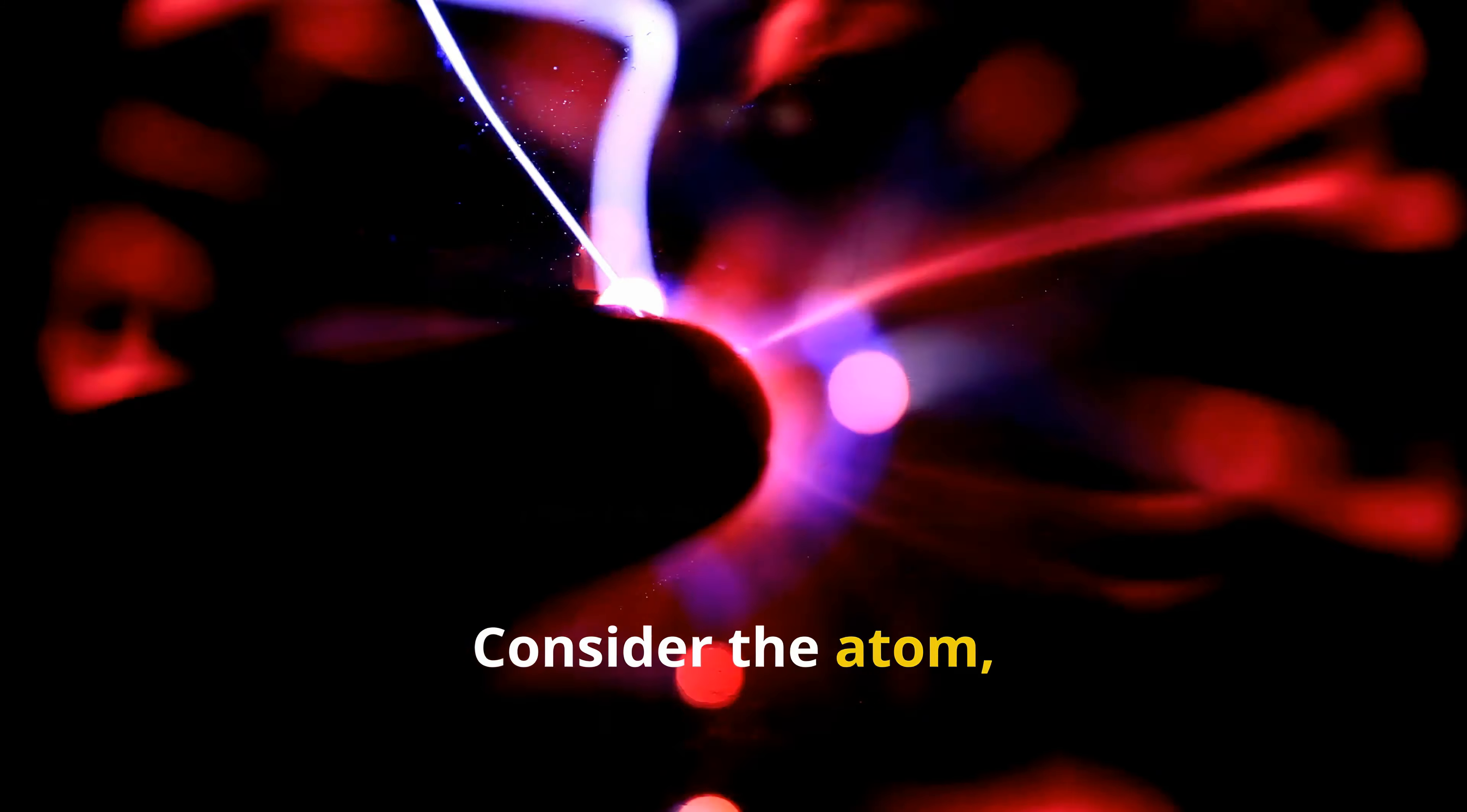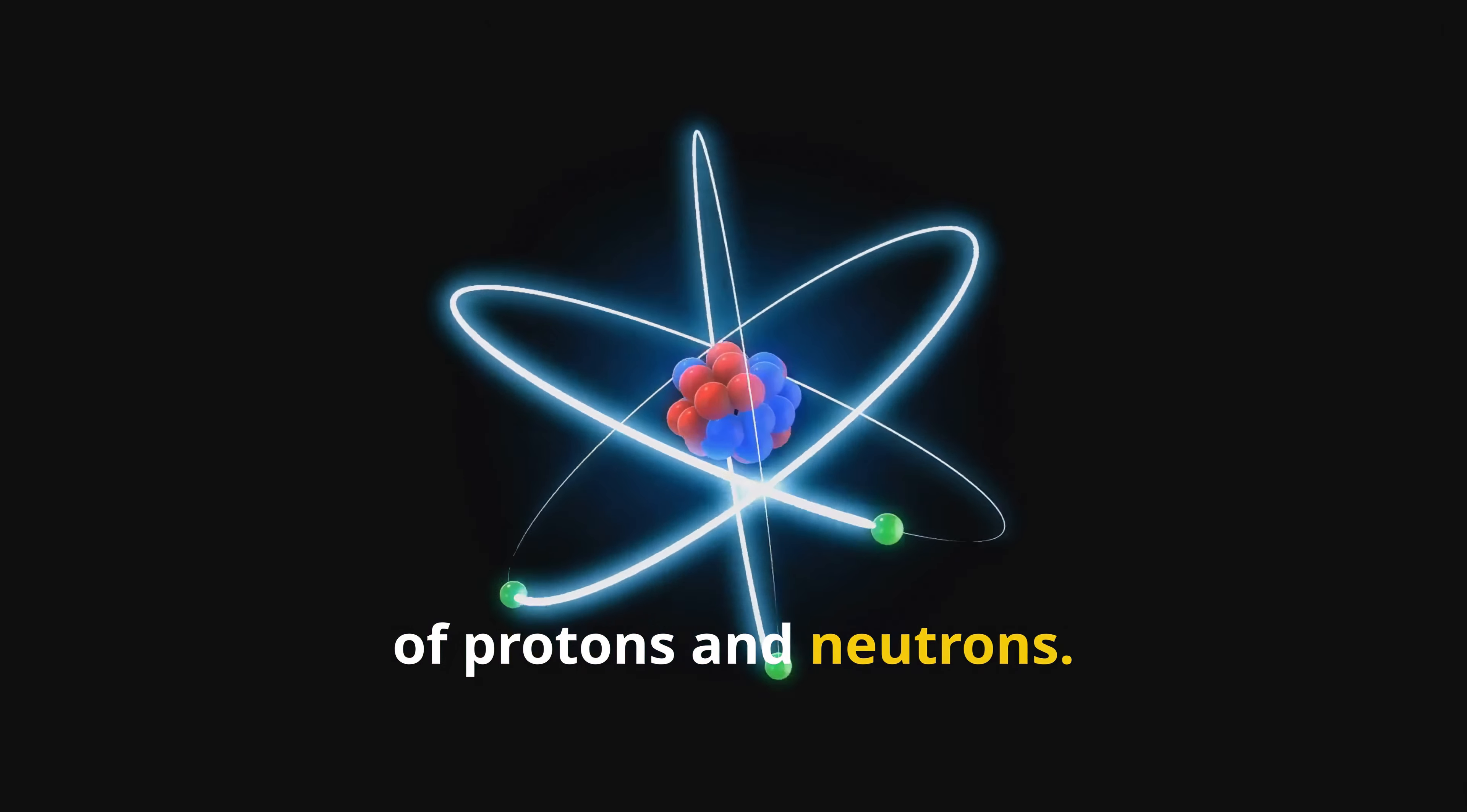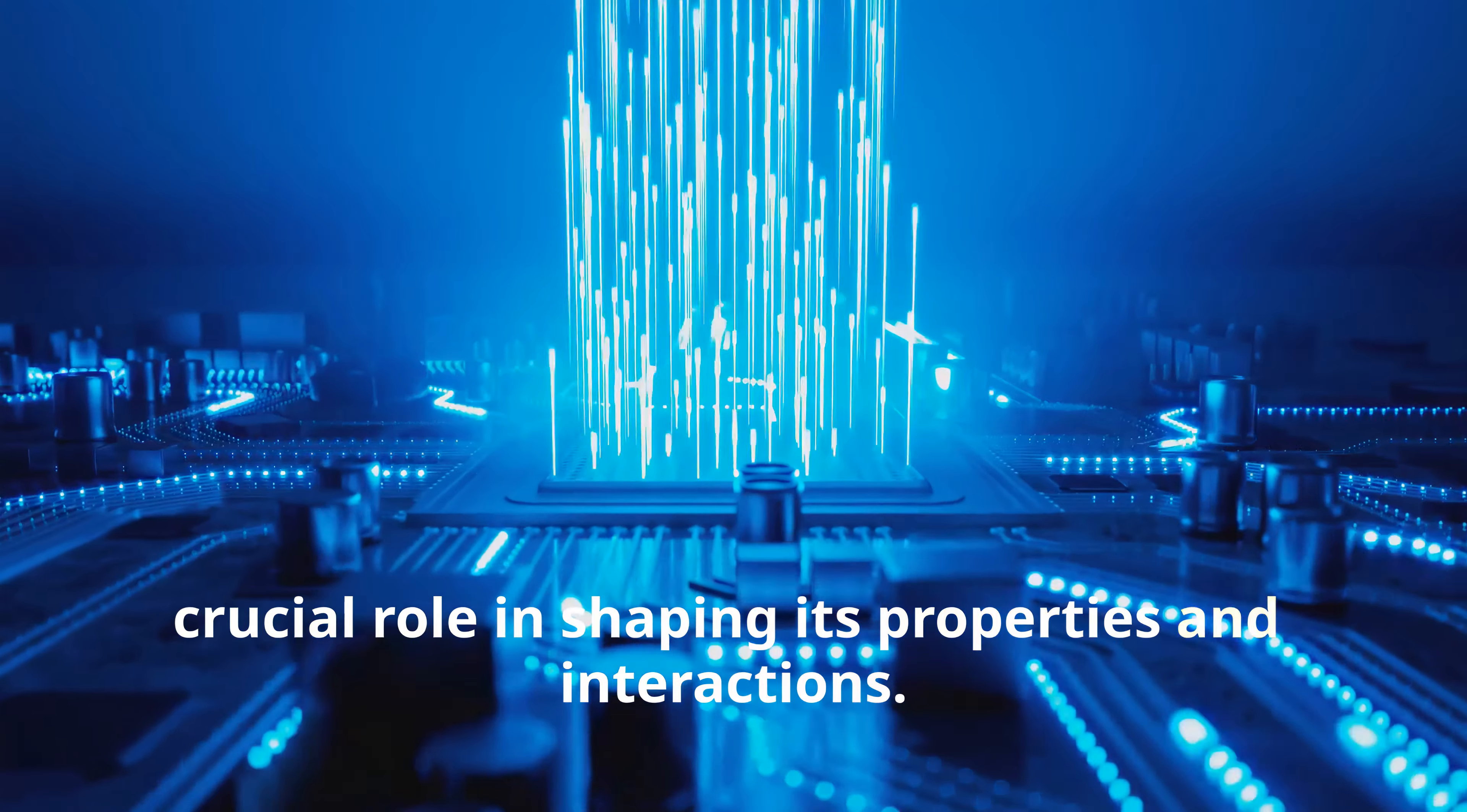Consider the atom, once thought to be the indivisible unit of matter. We now know it's a miniature solar system, with electrons whizzing around a nucleus of protons and neutrons. This inherent uncertainty at the heart of matter suggests that information plays a crucial role in shaping its properties and interactions.